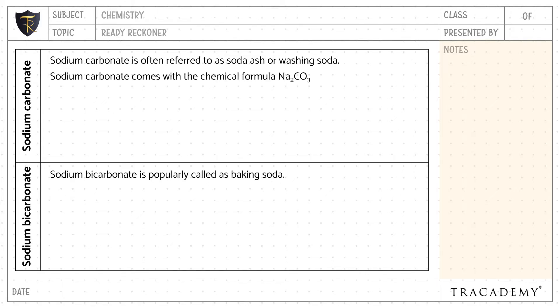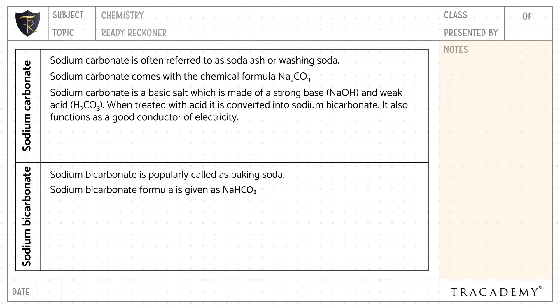Sodium carbonate comes with the chemical formula Na₂CO₃, whereas sodium bicarbonate's formula is given as NaHCO₃. Sodium carbonate is a basic salt, which is made of a strong base and a weak acid.